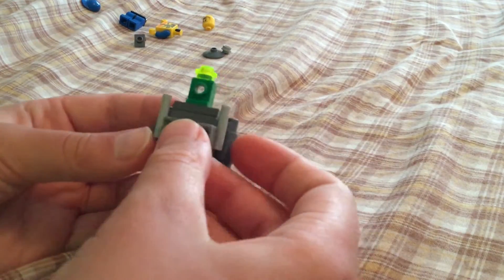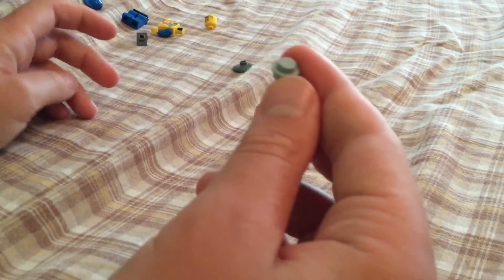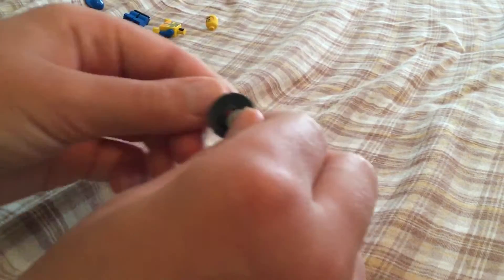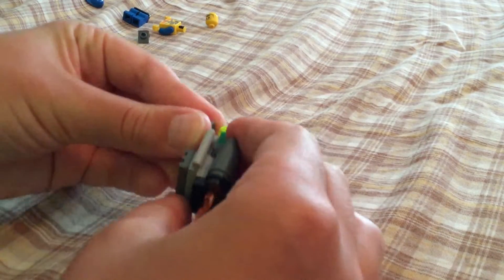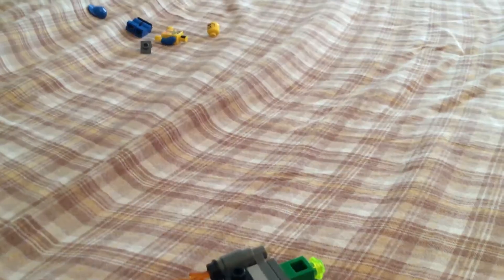Then you can get a 1x2 grill piece and put it on. Then you're going to take a 1x1 and a 2x2 radar dish, put it in like that, and then put it on like that. This is our jetpack. Now we're going to need to make a minifigure.